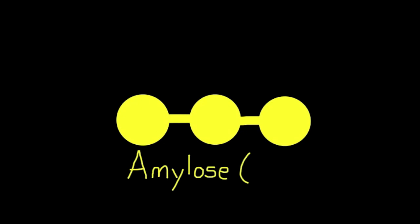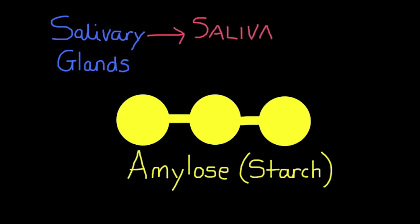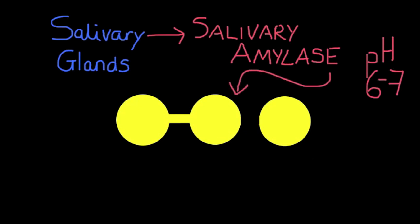In order to break down the substrate amylose, which is a component of starch, the salivary glands are the source of an enzyme — salivary amylase. This enzyme works best at an optimum pH of 6 to 7, and it will break down the amylose, or starch, into the products maltose and glucose.